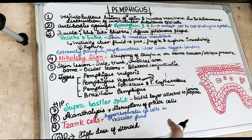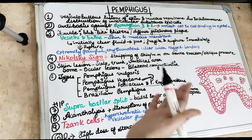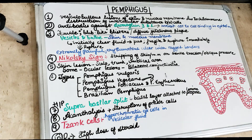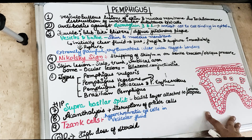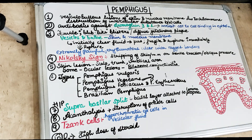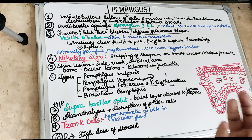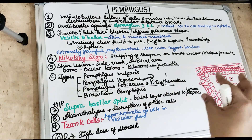Histopathologically, when we take a cross section, we see vesicles or bullae present in the epithelium. There is a suprabasilar split — the superficial part of the epithelium separates from the basal part. The basal layer remains attached to the lamina propria and connective tissue. There is loss of intercellular bridges, and a collection of edema fluid in the spinous layer, which is why the vesicles are fluid-filled.